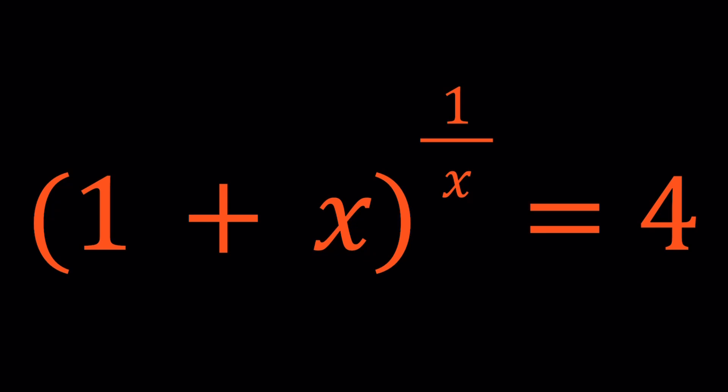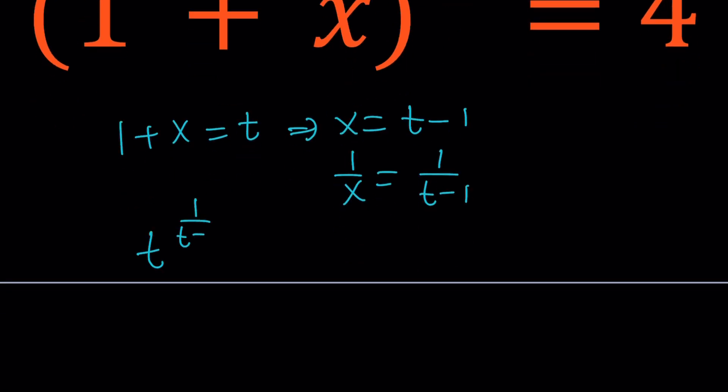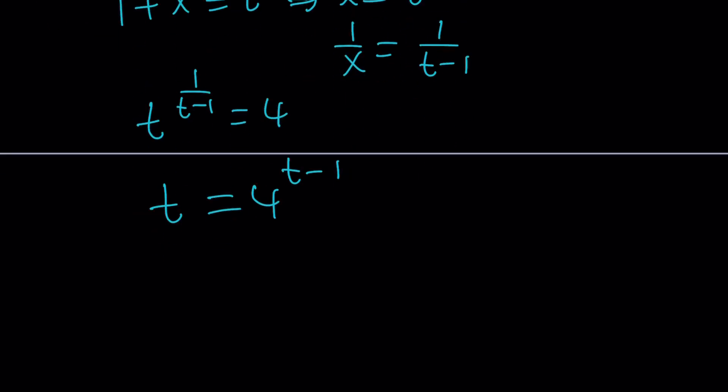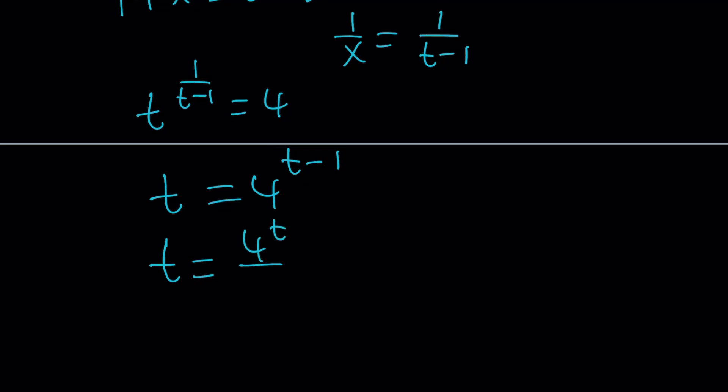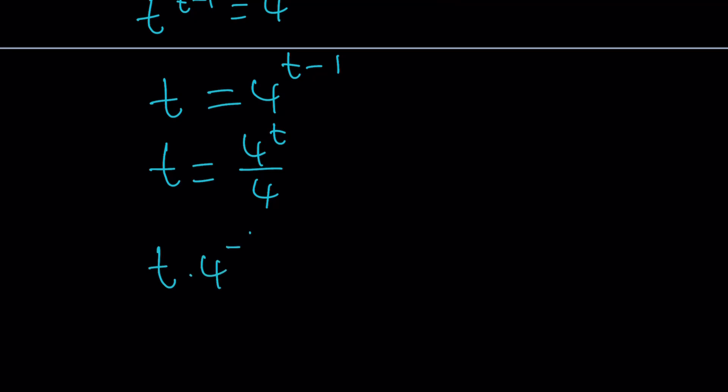Let's see how we can solve something like this. Obviously, for problems like these, you may want to use substitution. For example, you can replace x with something, or 1 over x with something, or 1 plus x with something. For example, if I set 1 + x equal to t, from here x is going to be t - 1, and 1 over x is going to be 1 over (t - 1). And this is going to give me t to the power 1 over (t - 1) equals 4. Then by raising both sides to the power (t - 1), I'm going to get t equals 4 to the power (t - 1). And then I can write this as t equals 4^t divided by 4. And then eventually, I can write this as t times 4 to the power negative t equals 1 over 4.